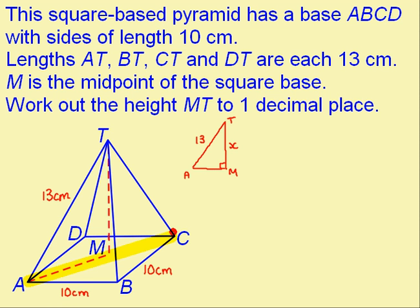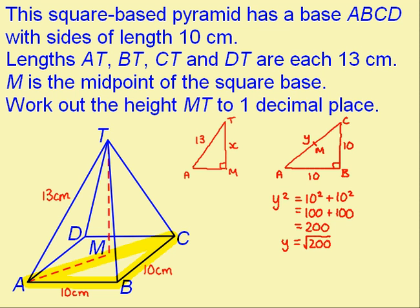AC is the hypotenuse of this right angle triangle. Again you should have drawn this in 2D. Now we work out y using Pythagoras. Now because this is a calculator question we can actually find the square root of 200. Notice that the question wants the final answer to one decimal place. So for this working out stage I'm going to have two decimal places and that's 14.14.